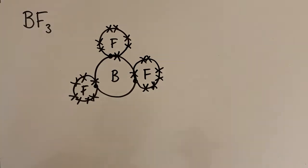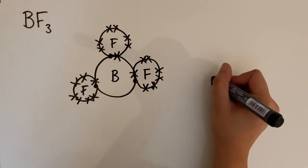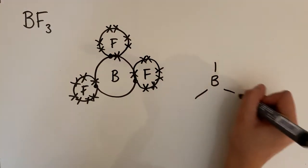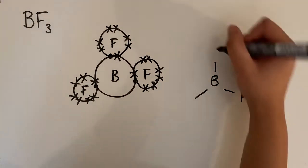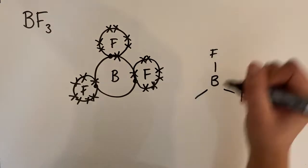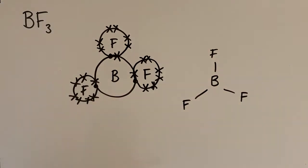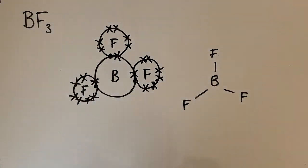Looking at the displayed formula for BF3, boron doesn't have any lone pair of electrons once it's bonded.